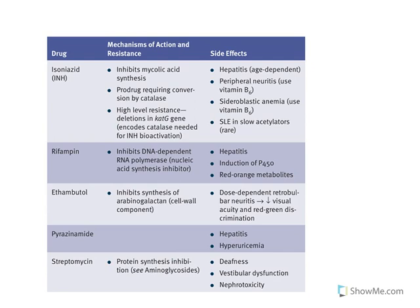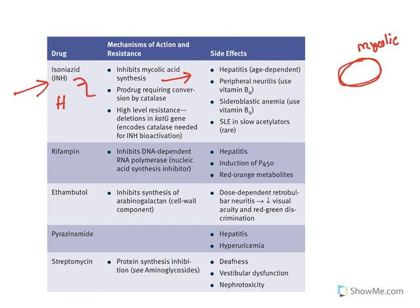Isoniazid, also known as INH, is coded as H. Its mechanism of action is inhibition of mycolic acid synthesis. The tuberculosis organism's uniqueness is its waxy mycolic acid cell wall layer, which is inhibited by isoniazid. Isoniazid is a prodrug — it requires an enzyme called catalase, synthesized by the bacteria, to be activated. The active drug then inhibits mycolic acid.